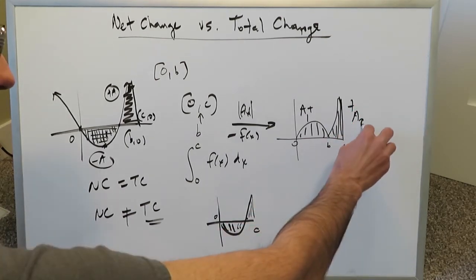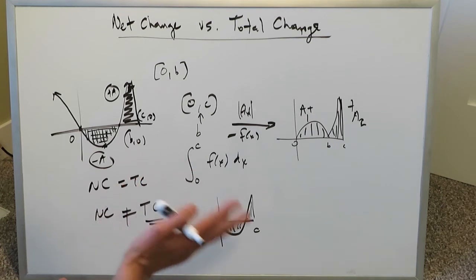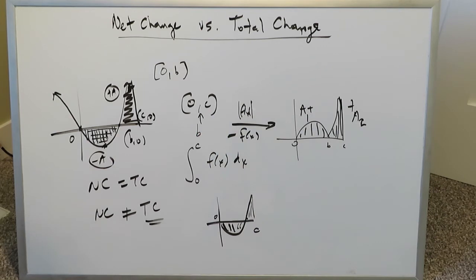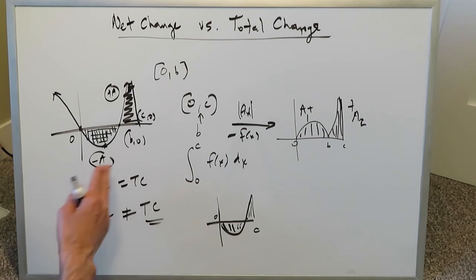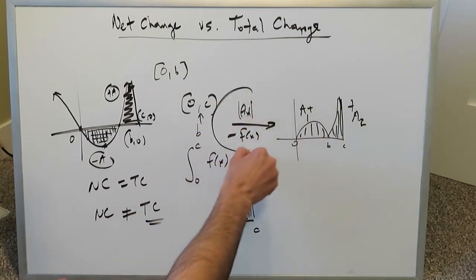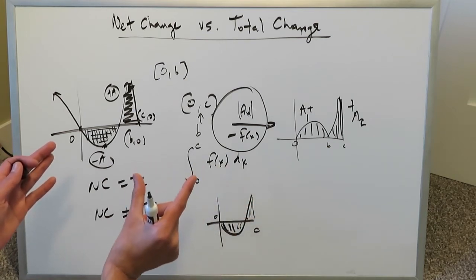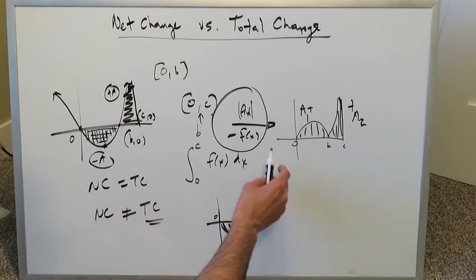You'd have positive area one and positive area two, which captures the total change well. The main difference: net change is your basic definite integration procedure — however the curve lies over the interval, it automatically captures net effects. Total change requires a special treatment where any sub-interval that is negative must be converted to positive.